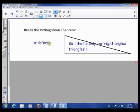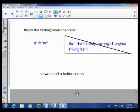Remember, a squared plus b squared equals c squared, only for right-angled triangles. So today we're going to investigate a better option.